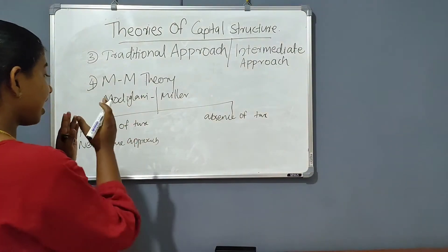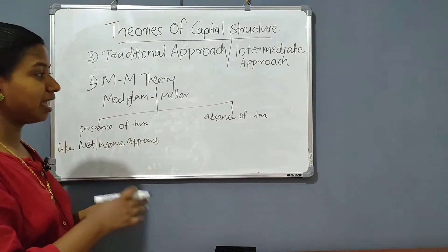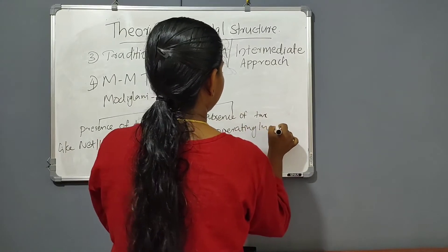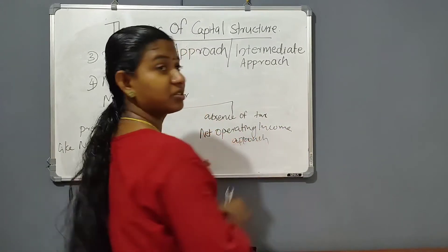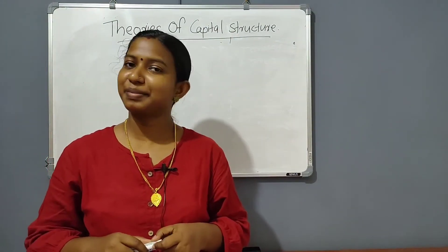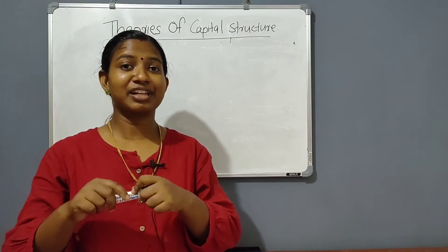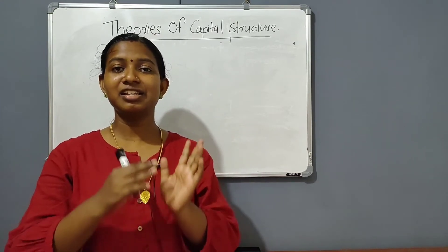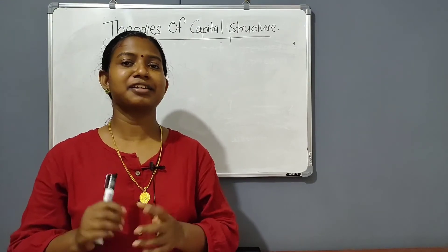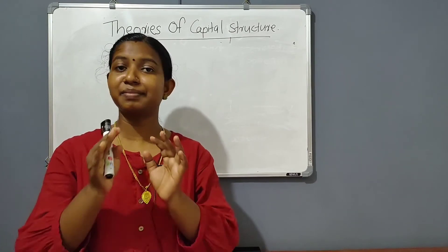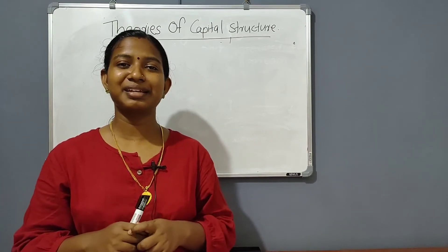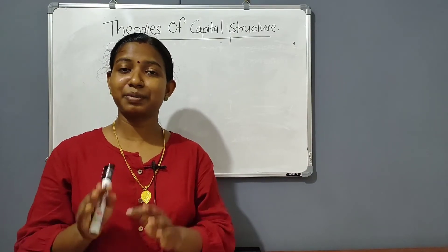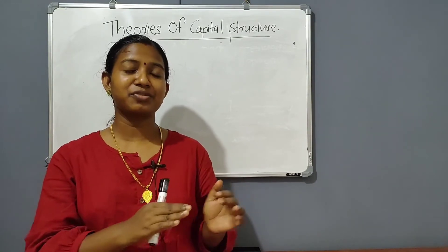In the M-M approach in the absence of tax, it is the same as the Net Operating Income approach — the Irrelevance Theory. In the presence of tax, it is relevant — it is the same as the Net Income approach. So we are going to approach M-M in the presence of tax. The capital structure theories are: Net Income approach, Net Operating Income approach, Traditional approach, and M-M approach with presence and absence of tax.